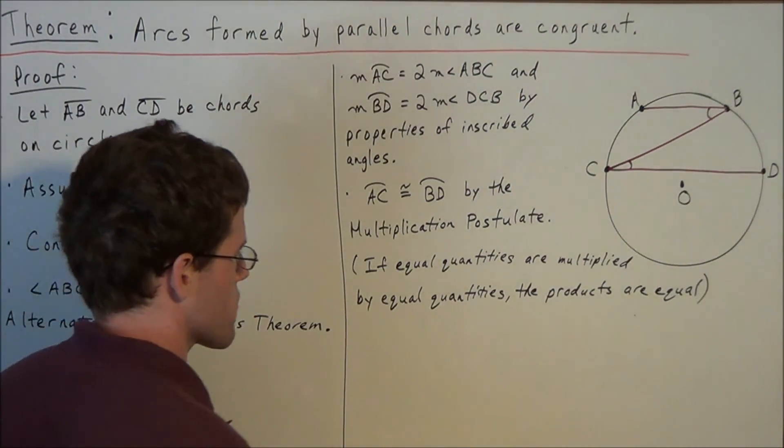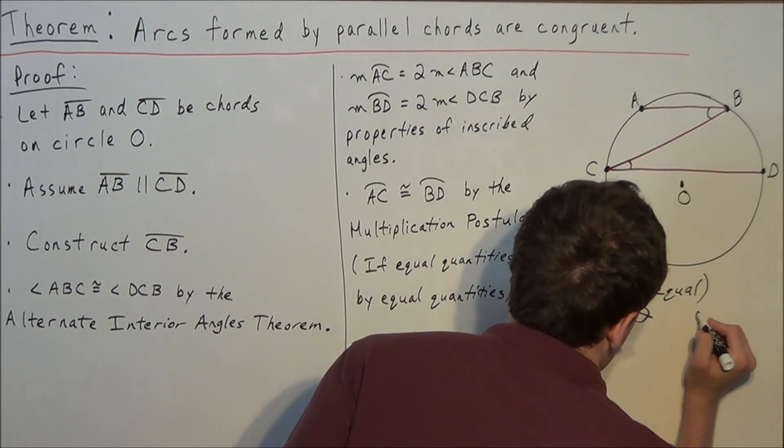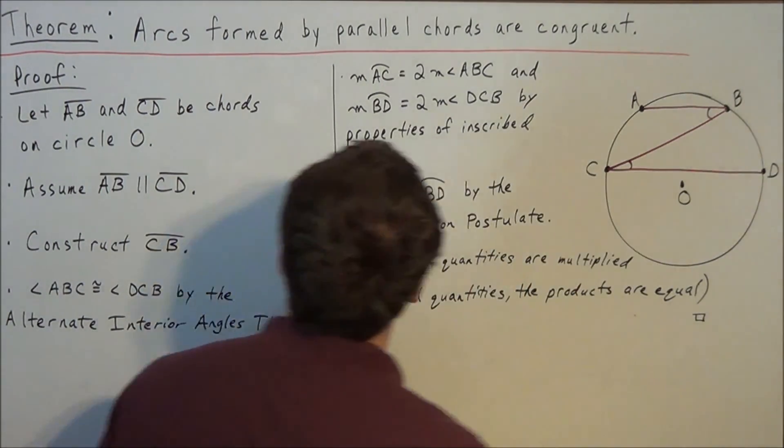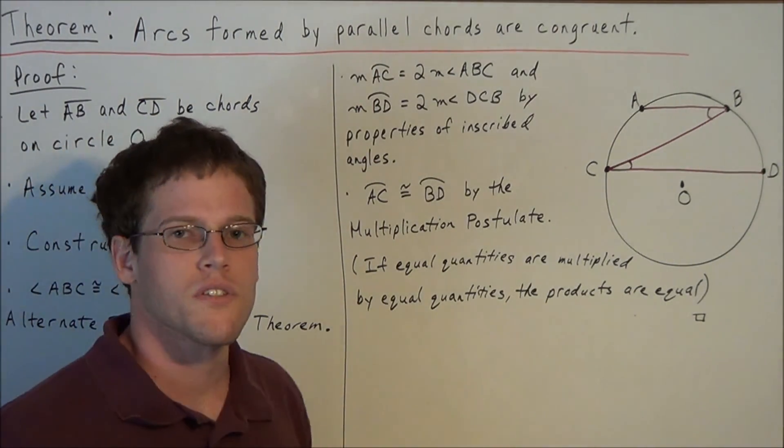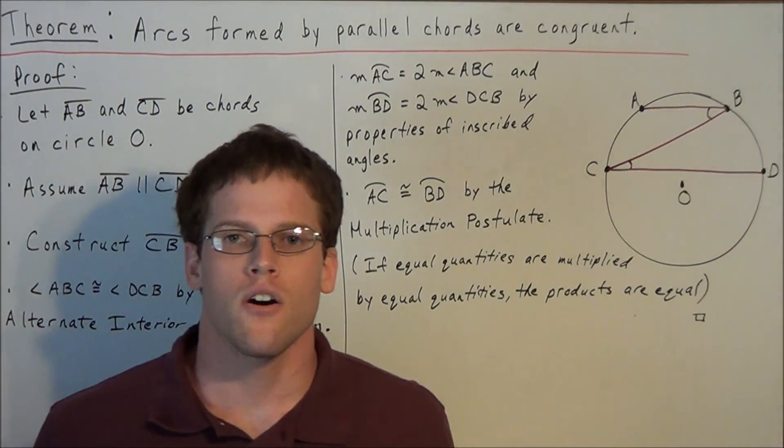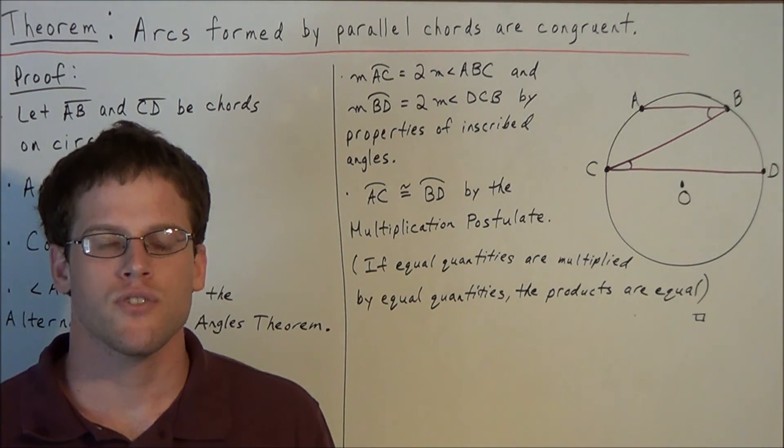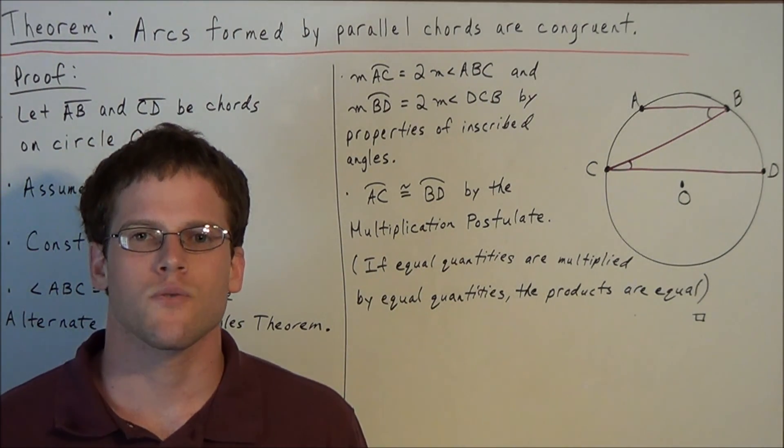So this is sufficient enough to conclude our proof. We'll put a little symbol here to say that we proved the theorem which was to be proved. Okay, well this is going to conclude this video on proving a theorem from circle geometry. Thank you all for watching, and I hope that this was helpful.